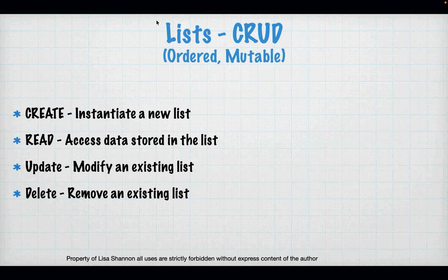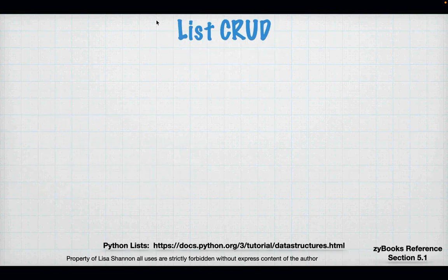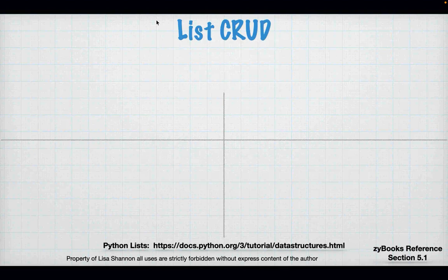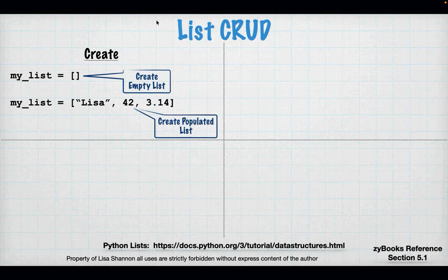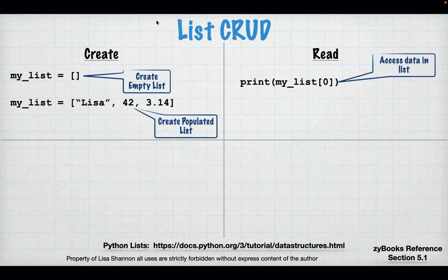Let's talk about CRUD: Create, Read, Update, Delete. Lists and dictionaries both fully support CRUD. For a list, you create it using open and close square brackets — either empty or populated with data. To read data, you use the square brackets and the index, just like we did with strings. Instead of getting a character out of a string, you're getting a whole string, an integer, or a float. Always remember the index of the first element is always zero.